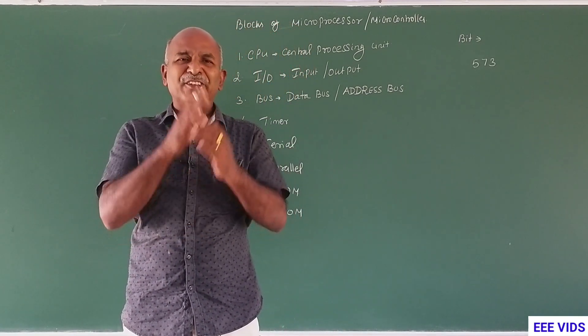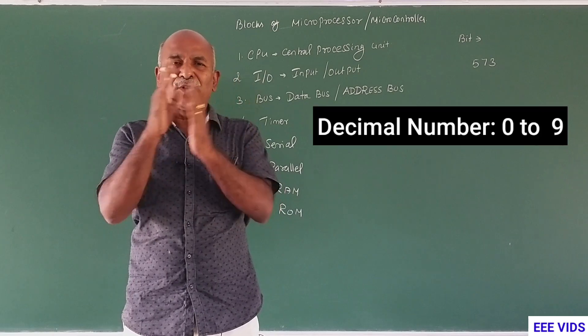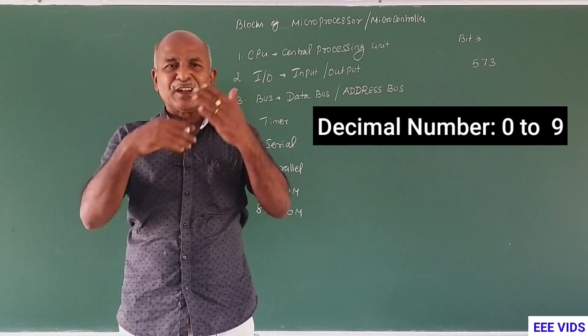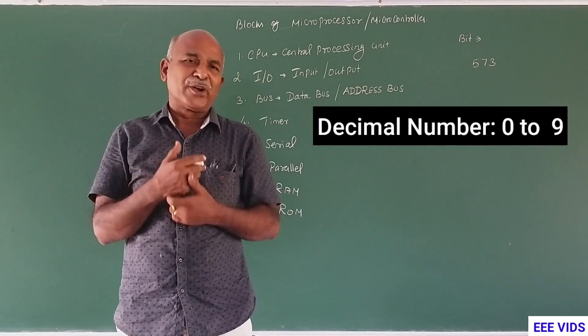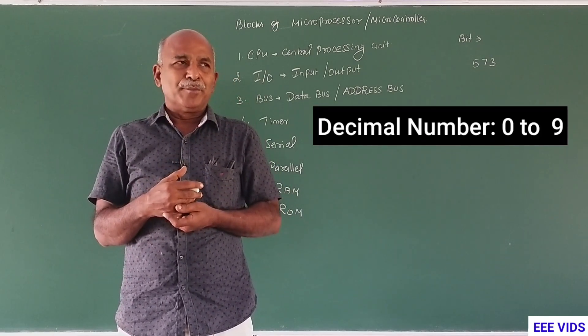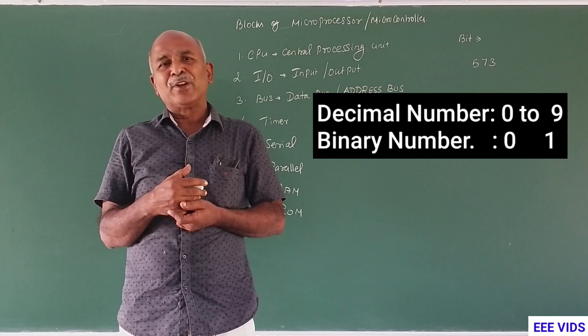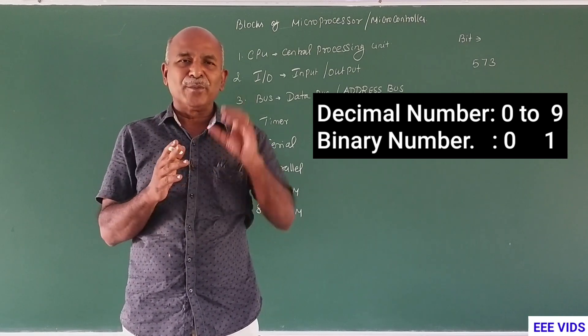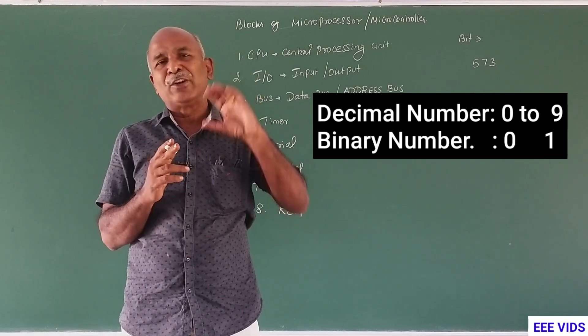In the decimal number system, basic numbers 0 to 9 will be there. From these, we will develop numbers. In binary, we will develop using only 0 and 1 — two numbers to develop binary.